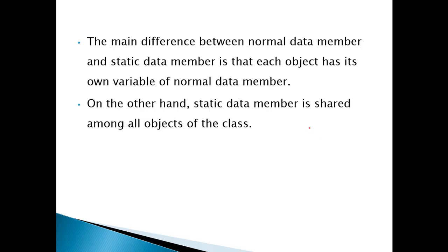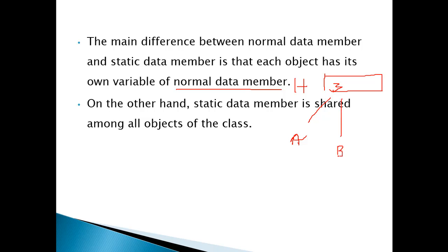ہمارے پاس جو variables ہوتے ہیں، ایک instance variable ہوتے ہیں، دوسرے static variables ہوتے ہیں۔ Instance variable یا ان کے لیے normal variable کا word use ہوتا ہے۔ یہ کیا ہوتے ہیں؟ اگر کسی class میں بنیں — suppose ایک class ہے جس کا نام Hello ہے — اور ہم نے یہاں پر ایک variable لیا ہے، suppose variable کا نام z ہے۔ ہم نے اس class کے تین objects بنا دیے ہیں: ایک کا نام a، دوسرے کا نام b، تیسرے کا نام c۔